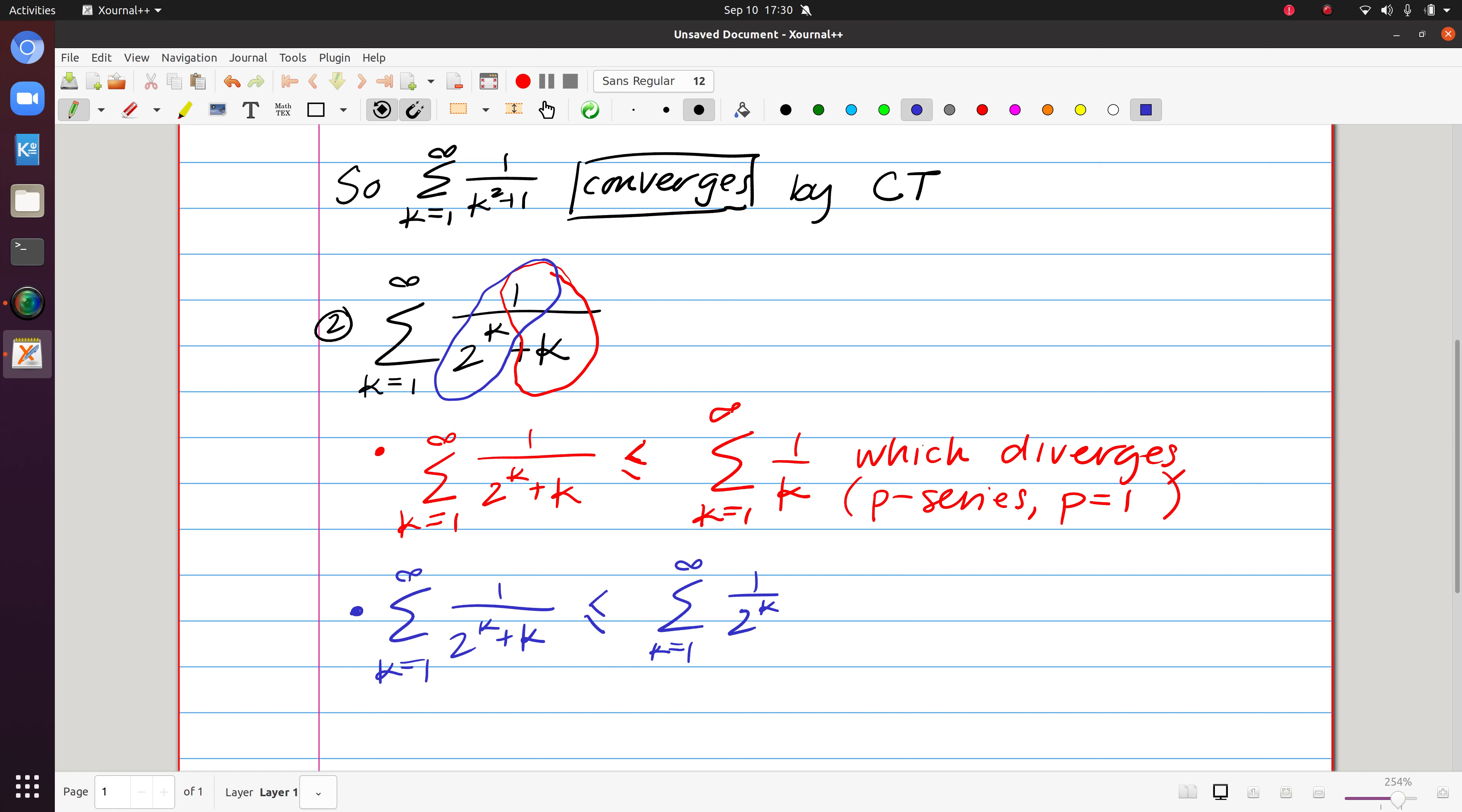This series in blue, let's just write it in another way. Notice that this is the same thing as the sum of 1 half to the k, which is making it a little bit more explicit that it is a geometric series. So this series converges.